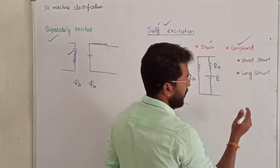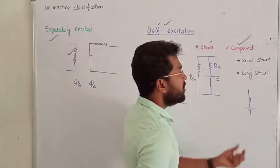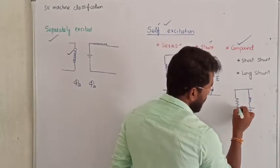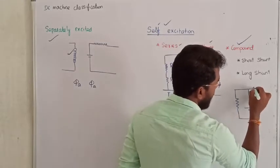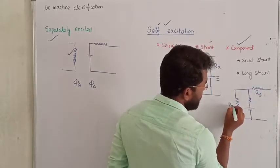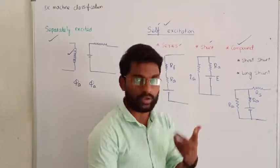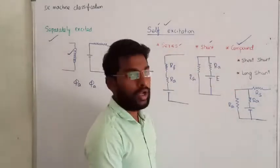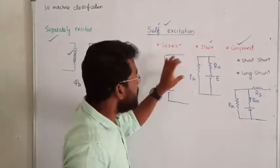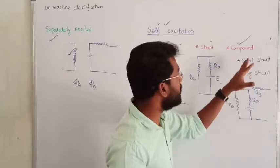In short-shunt: first we have an armature winding, then we keep the shunt winding, and then the series winding. So this is series field resistance, this is shunt field resistance, and this is armature winding. In compound, it is the combination of series and shunt — series field resistance and shunt field resistance, both connected together to design the compound machine.